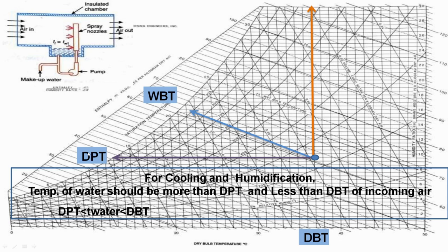One important condition for the cooling and humidification process: the temperature of water should be greater than the dew point temperature (DPT) of the incoming air and less than the dry bulb temperature (DBT) of the incoming air. So DPT < T_water < DBT.